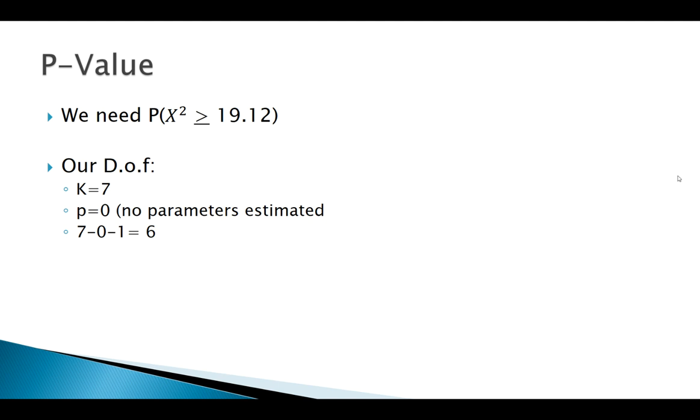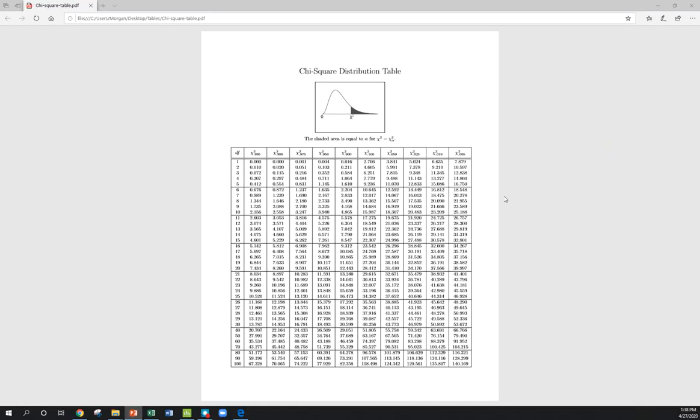Let's look at our chi-squared table. We could estimate this with our table. Our degrees of freedom was six. Our test statistic was 19.12. Notice this table gives us the area to the right. If I go out here, degrees of freedom 6, 19 is somewhere out here.